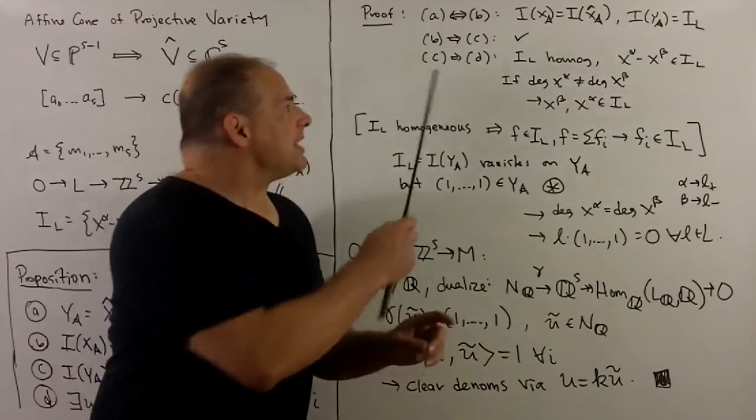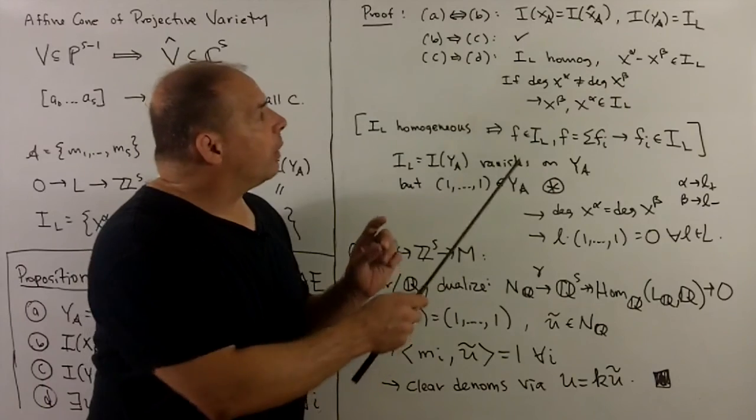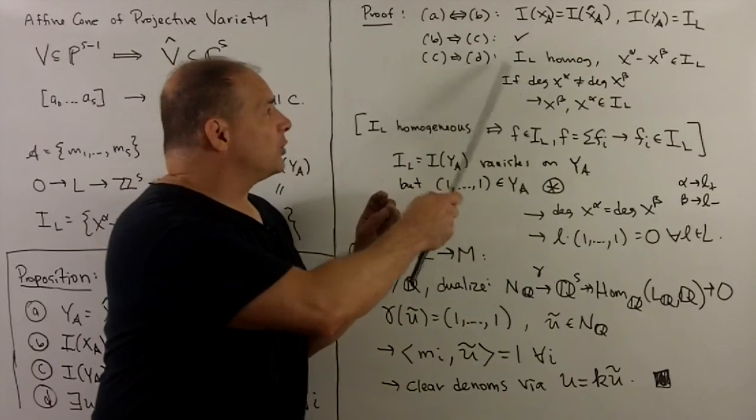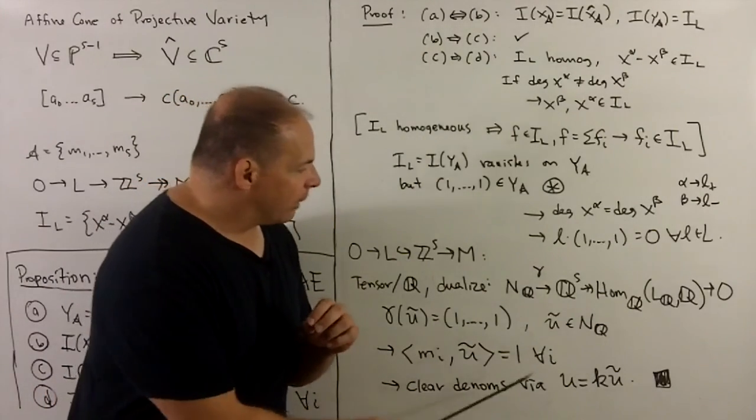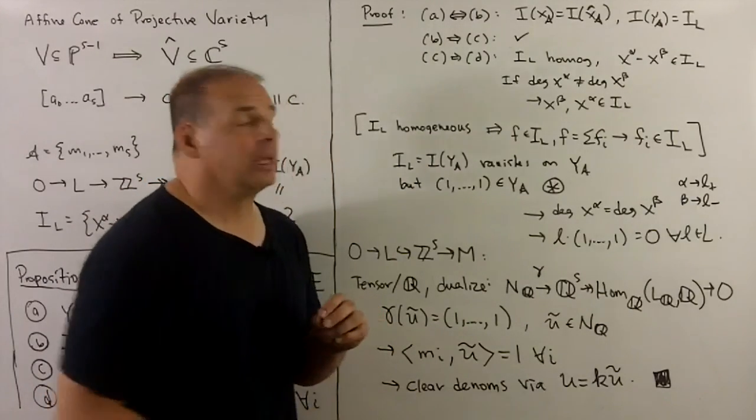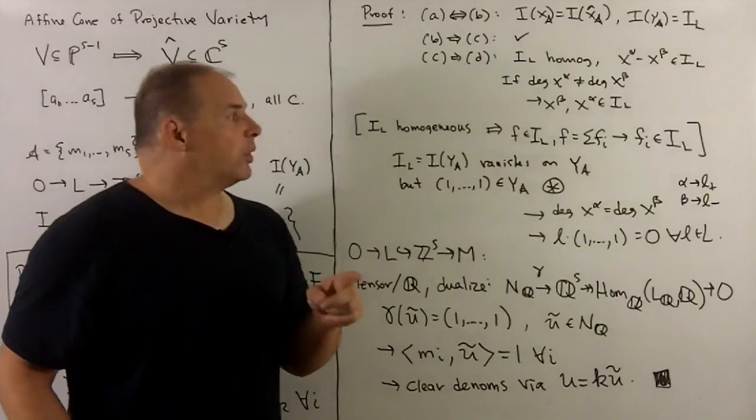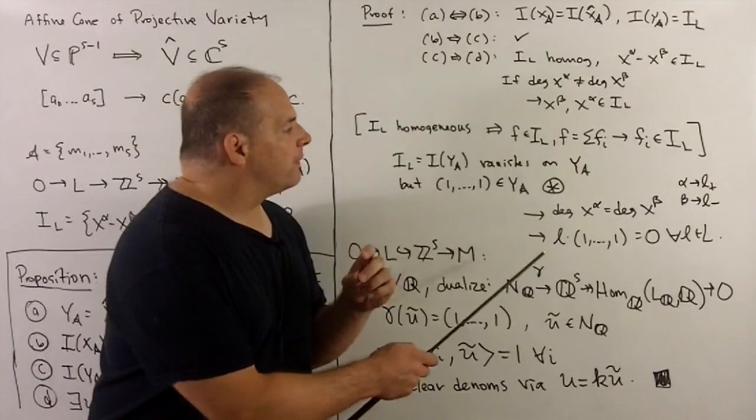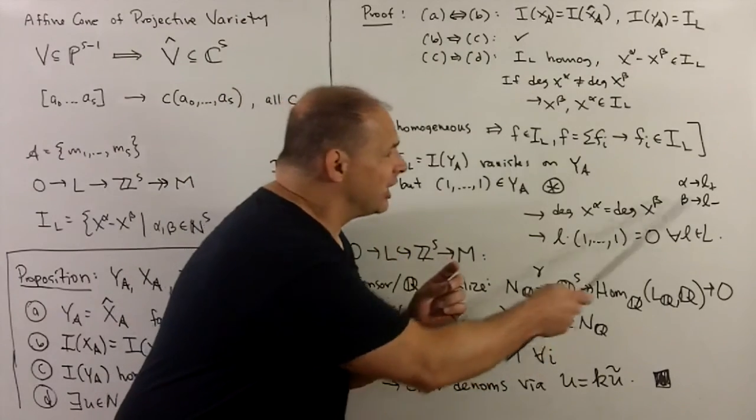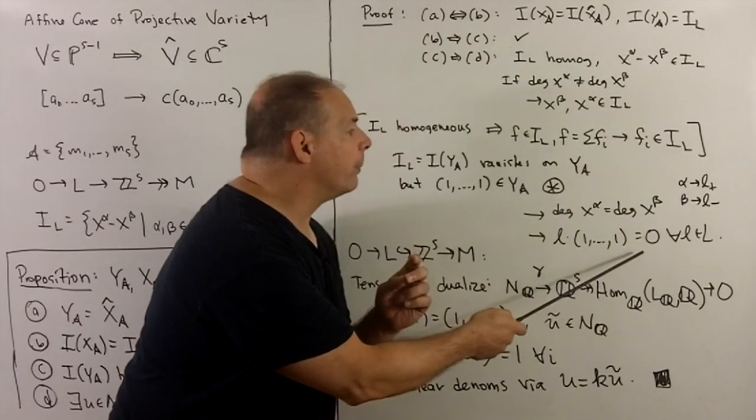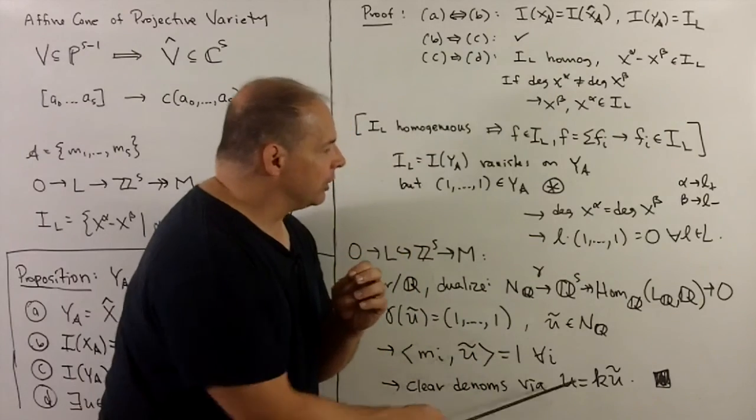For C implies D, what do we want to do here? I want to show if the toric ideal is homogeneous, then we're going to be able to produce this one-parameter subgroup u. We have two parts here. For the first part, I want to show that if I take (1,1,...,1) and dot with any relation in the lattice of relations, we get zero. Then the second part's going to be producing u.